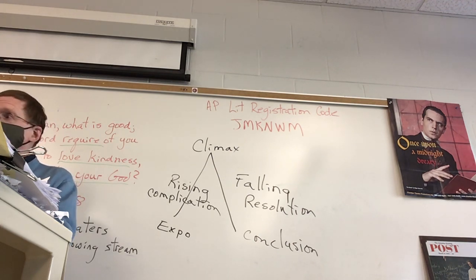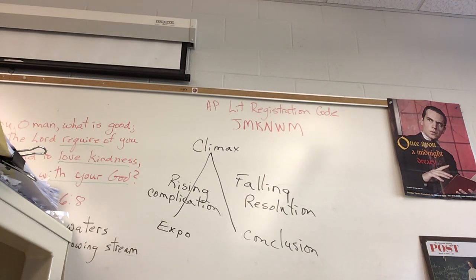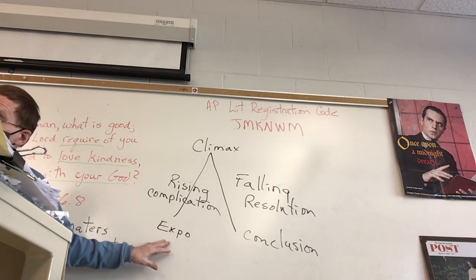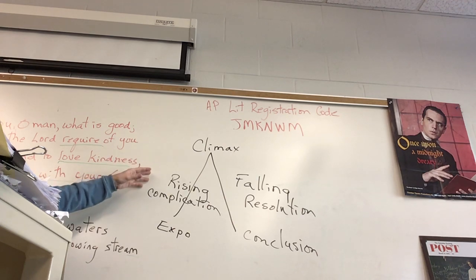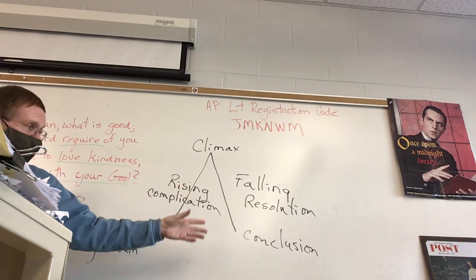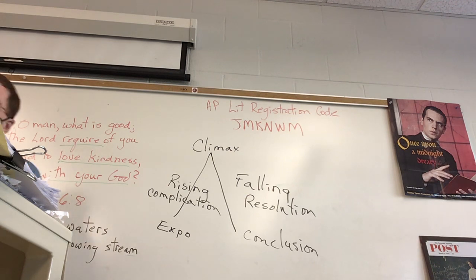Some modern plays have three, some two. Basically a plot has these five elements, and Shakespeare's acts are associated with each of these. The first act is the exposition or introduction. The second act is the rising action. The climax is usually in the third act. Falling action and resolution in the fourth act, and the conclusion in the last act. It's not that simple, but that's just generally something to anticipate.